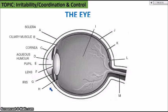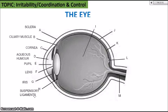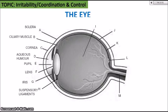H is the suspensory ligaments, which also play a role in accommodation. They can either loosen or tighten to adjust the shape of the lens. When the suspensory ligaments loosen or slacken, the lens gets fatter. When the suspensory ligaments are pulled tight, that stretches out the lens and makes it appear thinner. They are attached to the ciliary muscle and the lens.